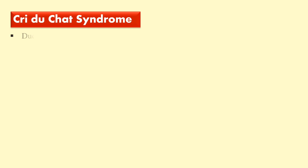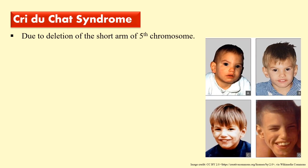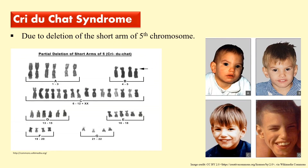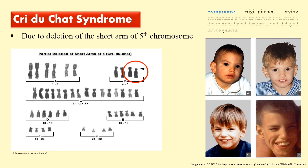Next is Cri-du-Chat syndrome. This syndrome is due to the deletion of the short arm of the fifth chromosome. In the karyotype, you can see the fifth chromosome has a deletion — this arrow represents a small deletion in the short arm. Due to this deletion, certain symptoms develop. One of the main symptoms is that the patient cries like a cat, which is why this syndrome gets its name Cri-du-Chat. Other symptoms include distinctive facial features and delayed body development.